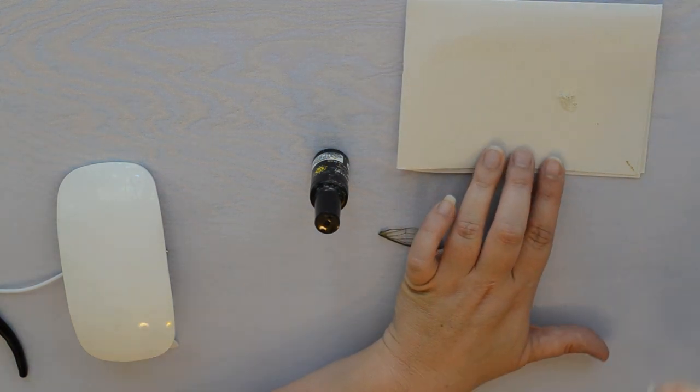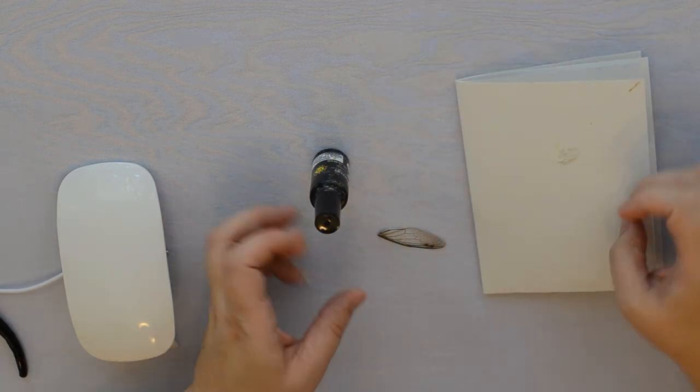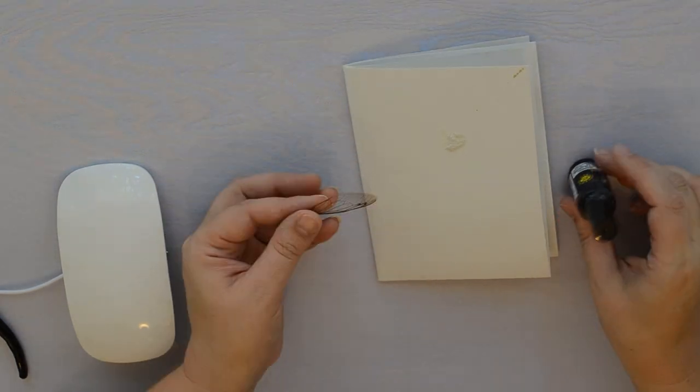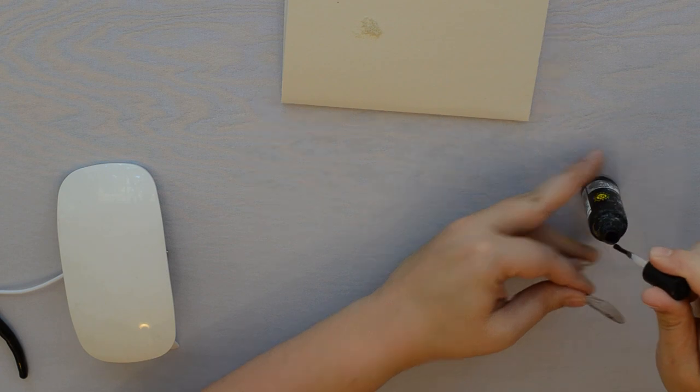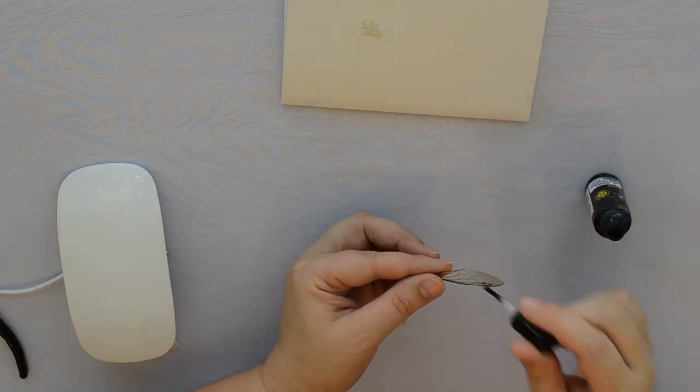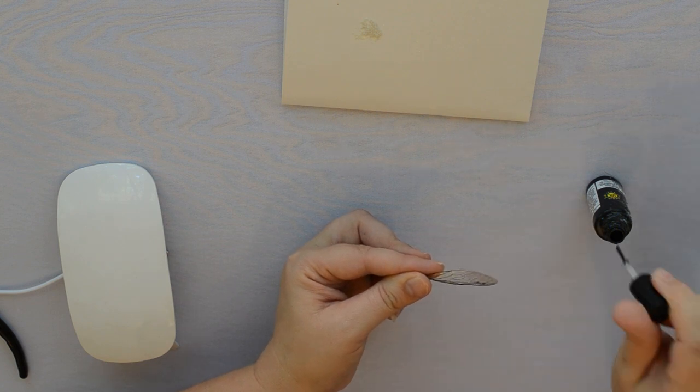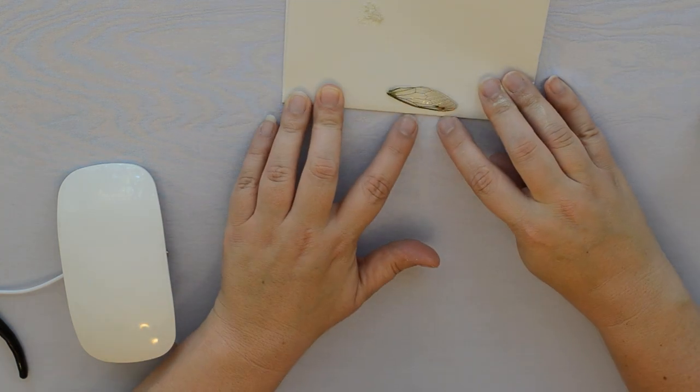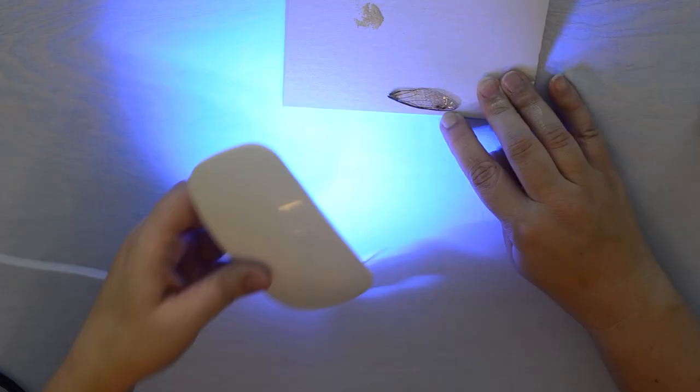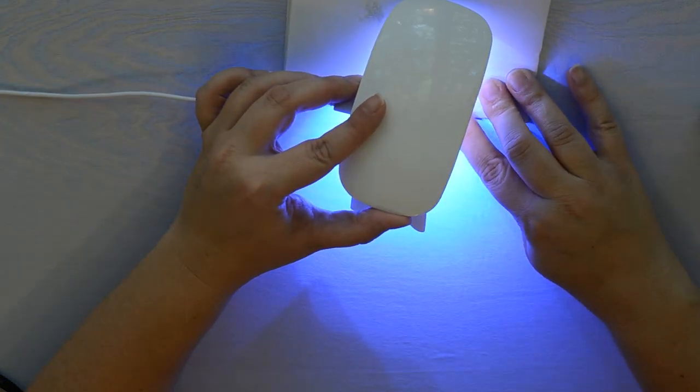I'm going to prep the mica powder for the second to third layers that I'll do a little bit later. So first we're gonna paint on one layer of resin on each side of the wing and then we're gonna dry that with the UV light for 20 to 30 seconds.